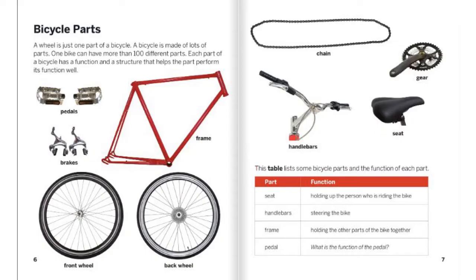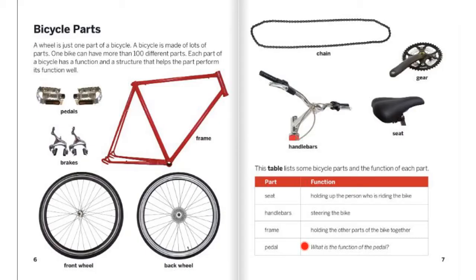This table lists some bicycle parts and the function for each. One part is the seat — its function is holding up the person who is riding the bike. Another part is the handlebars — the function is steering the bike. Another part is the frame — its function is holding the other parts of the bike together. Another part is the pedal. What is the function of the pedal? That's what I would like you to think about.